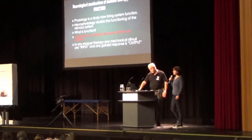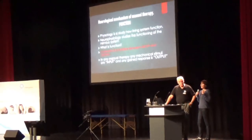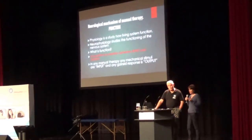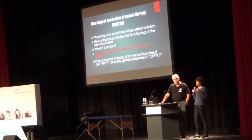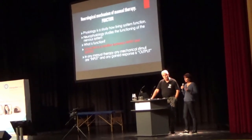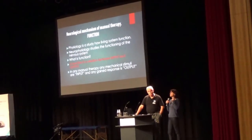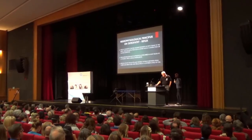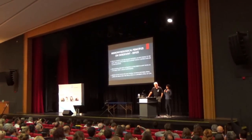Physiology studies the function of the living system, and the actual meaning of 'function' is the relationship between input and output. This is how the central nervous system works: the input is any stimulus — touch, compress, stretch, looking at or talking to the patient — that gets processed in the central nervous system. As a result, we get output: muscle activity, visceral activity, gland secretion, emotional, psychological, or even cognitive responses.